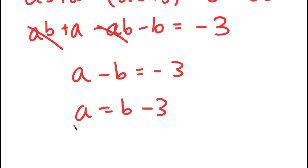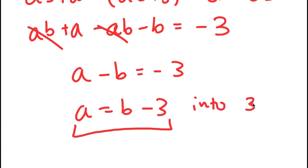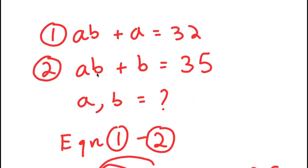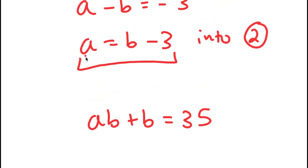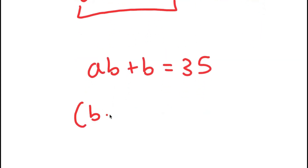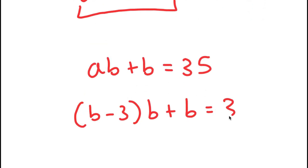Now I can substitute this value of A into equation number two. Equation number two is AB plus B equals 35. Now that I have A in terms of B, I can plug this in. So I get (B minus three) times B plus B is equal to 35.